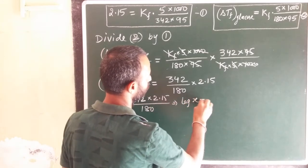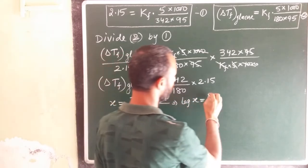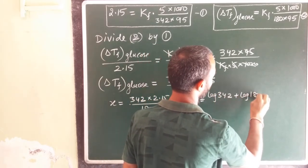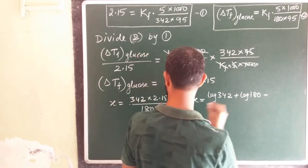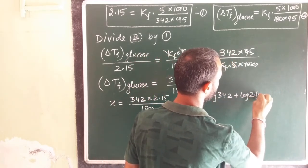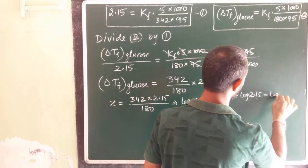Now, log of x equal to log of 342 plus log of 2.15 minus log of 180.